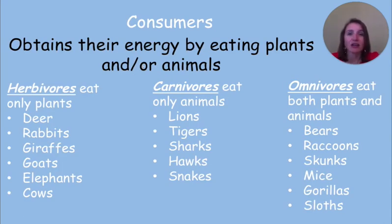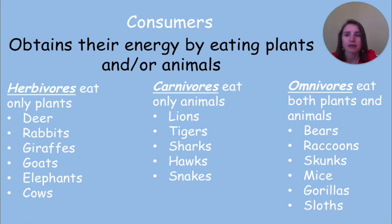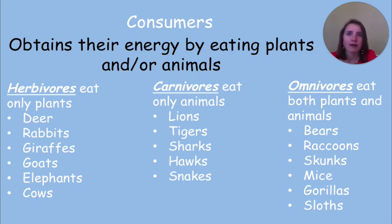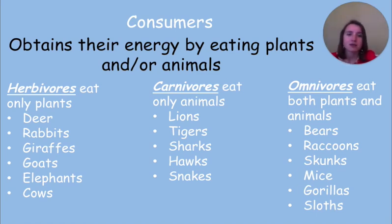Consumers obtain their energy by eating plants and or animals. There are three types of consumers. Herbivores eat only plants — deer and rabbits are examples of herbivores. Carnivores eat only animals — lions, tigers, and some dinosaurs are carnivores. And then there are omnivores. They want to eat plants, but they also want to eat animals. Bears, raccoons, and gorillas are omnivores.